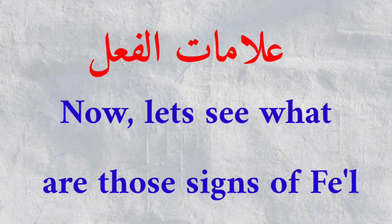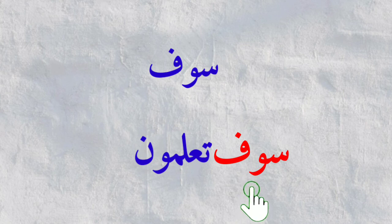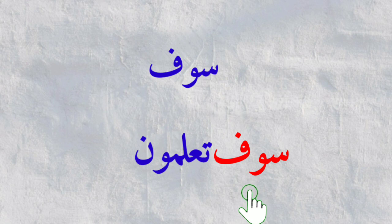Now we will see the signs of fi'l — mahiya alamat ul-fi'l. The very first sign is there must be qad before the word; for example, qad sami'a Allah. Whenever you see qad before any word, mark it as a fi'l. Next, whenever you see a seen before any word, mark it as a verb; for example, sa-yaqoolu as-sufaha'. Seen is a symbol of fi'l. Next one is sawfa — sawfa is also a symbol of fi'l; for example in the Quran, sawfa ta'lamun, meaning 'soon you will know.'